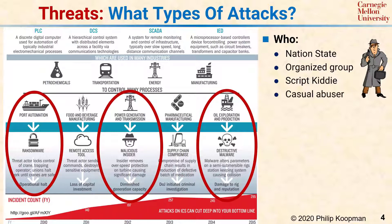Another class of threat actor is the casual abuser, who you might think of as a person who walks through a parking lot trying all the car doors to see who left the car unlocked. Finally, there are insiders, who can compromise security either through malicious intent or just plain negligence. An ex-employee in particular can do a lot of damage, especially if they retain a master password of some sort. But even well-intentioned employees who are trying to do the right thing can compromise security by, for example, unknowingly setting weak passwords, accidentally loading malicious software onto a system, or overriding safety mechanisms manually because they're in a hurry and under pressure to get the job done.